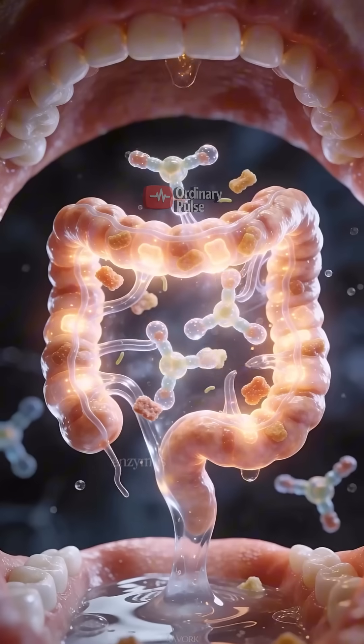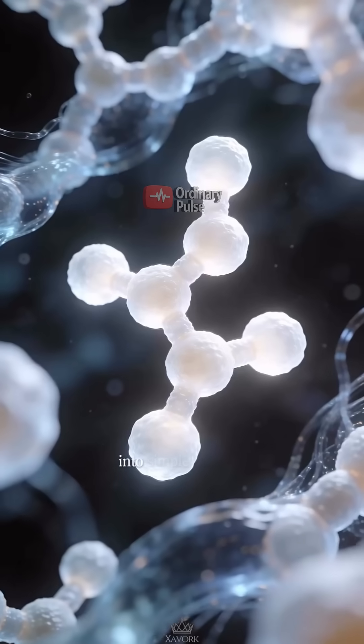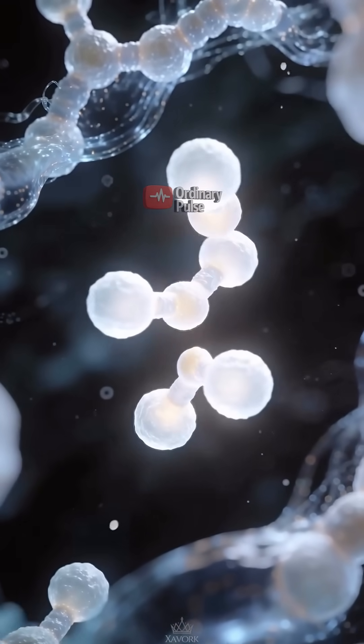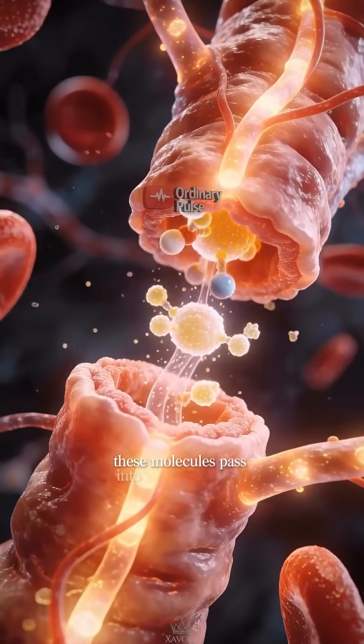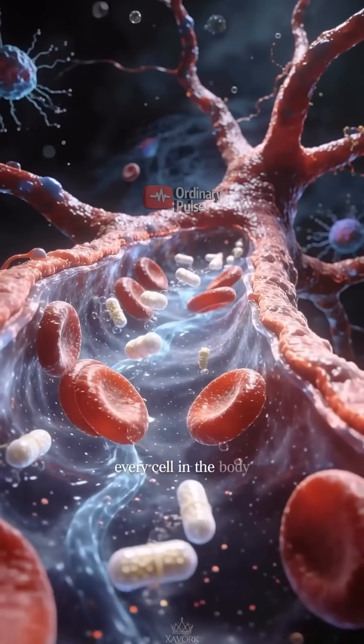enzymes in the mouth and small intestine convert sugars and starches into simple glucose molecules. These molecules pass into the bloodstream, where they are carried to nearly every cell in the body.